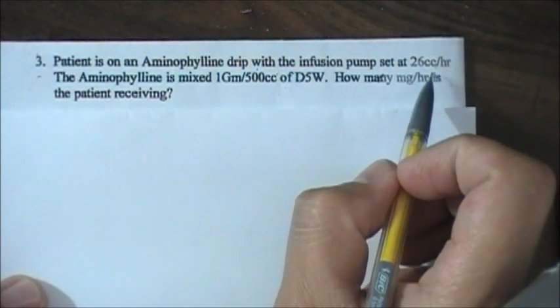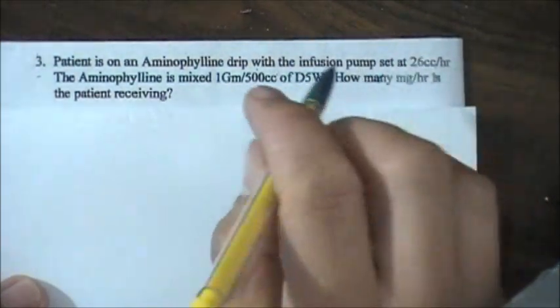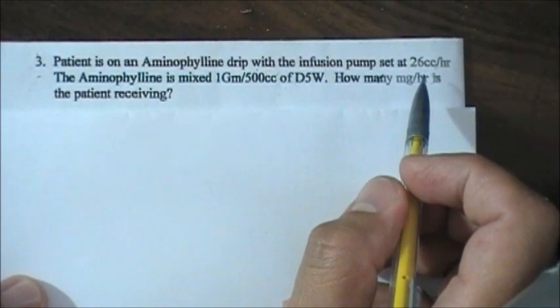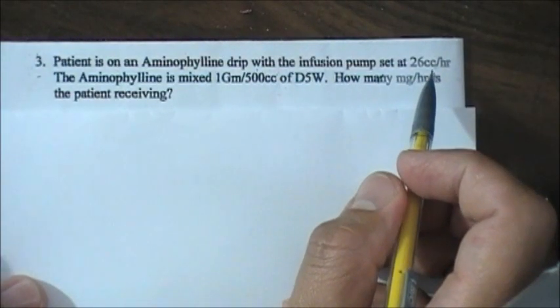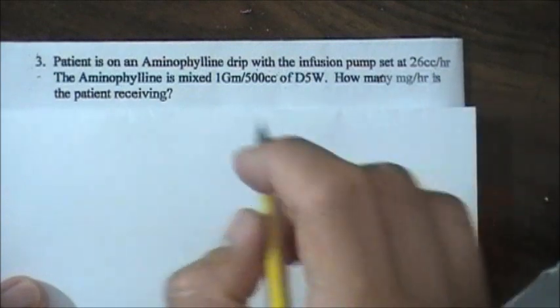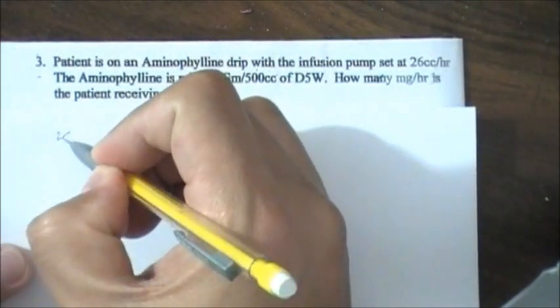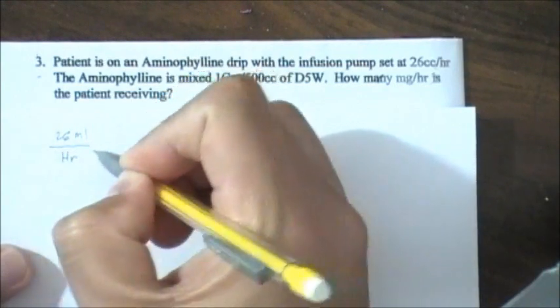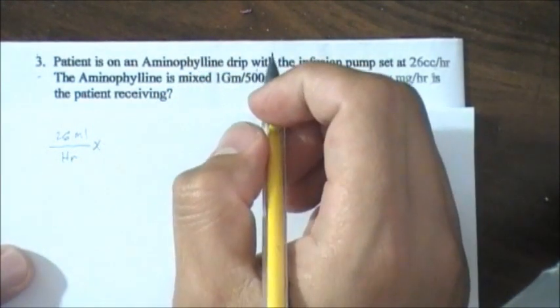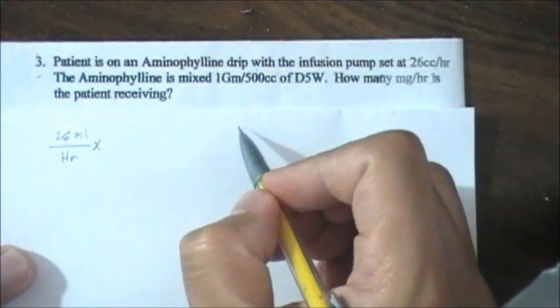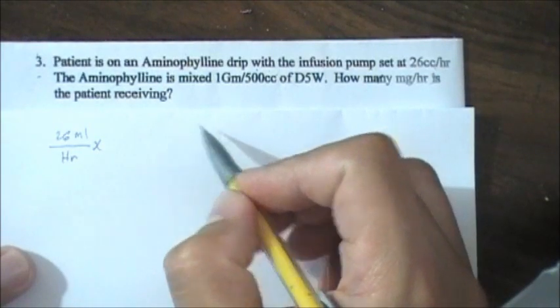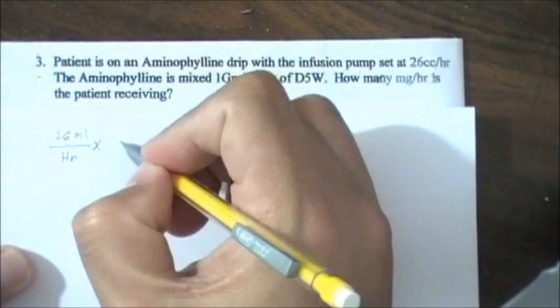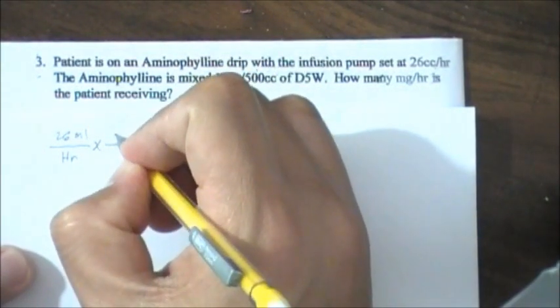You want to start first writing what you're giving the patient because that's the order. So 26ml per hour. Now we're going to use dimensional analysis again and your stock on hand is 1 gram over 500.